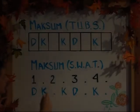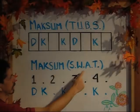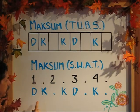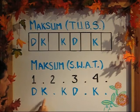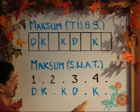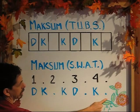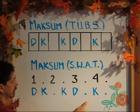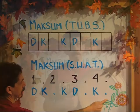Just like TUBS, we're going to begin by getting a pulse. Then we add the voice: ka, ka doon, ka, doon, ka, ka, doon, ka, doon ka, ka doon, ka.